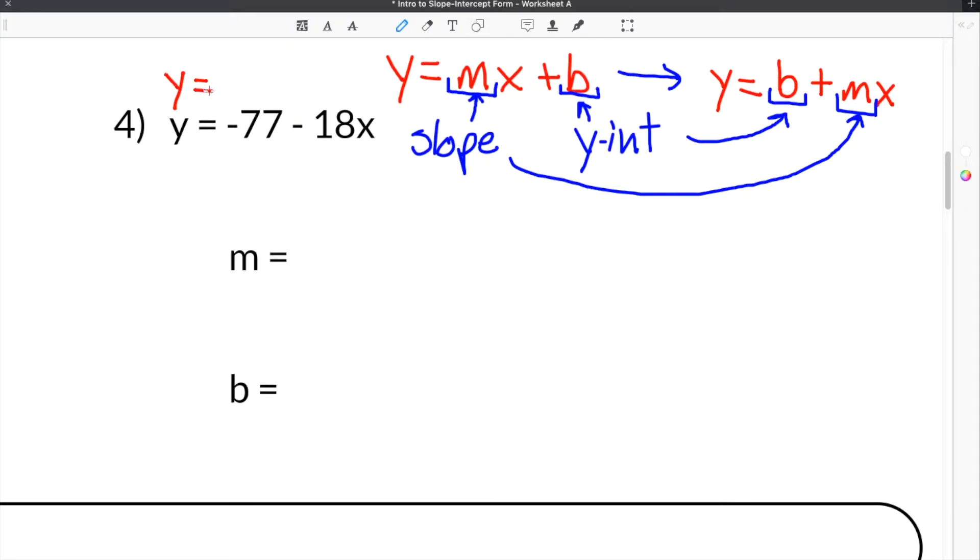Now this time, our equation is written in slope-intercept form that has the B first. And then the MX after it. So the Y-intercept comes first and the slope comes after it. And the reason I know the slope comes after it is because the slope is always attached to the X.